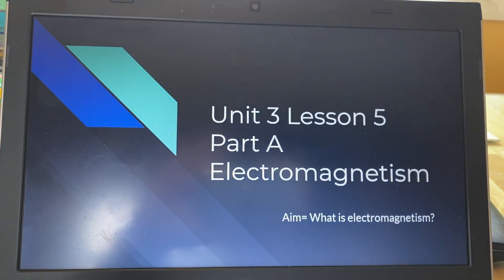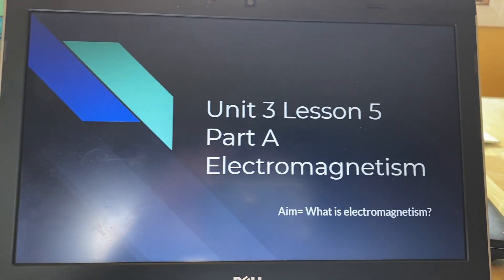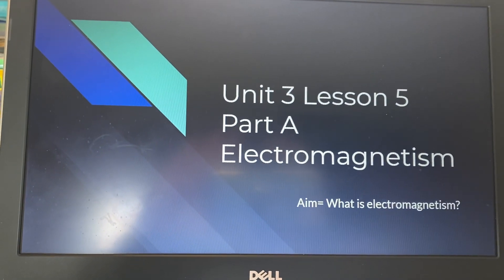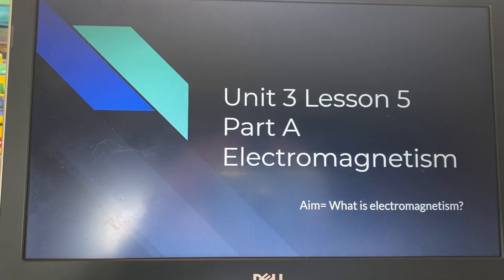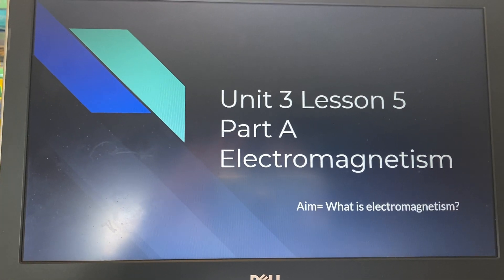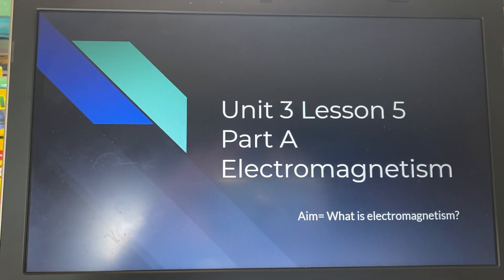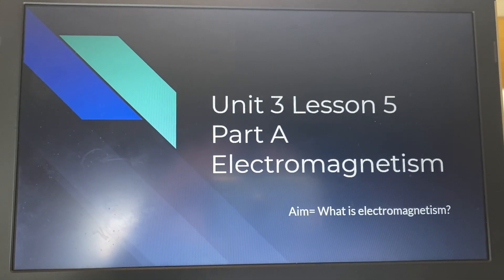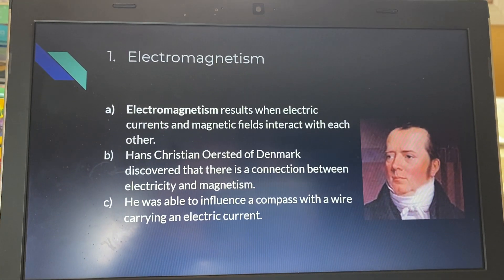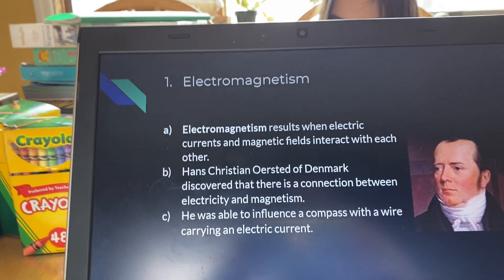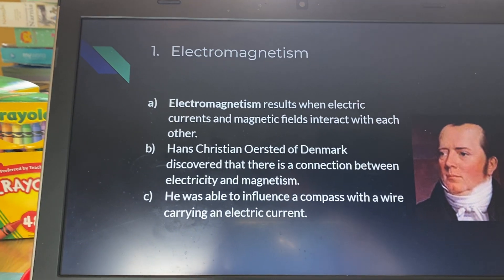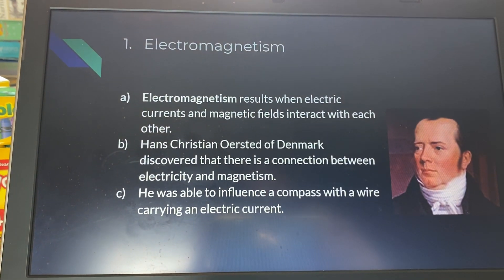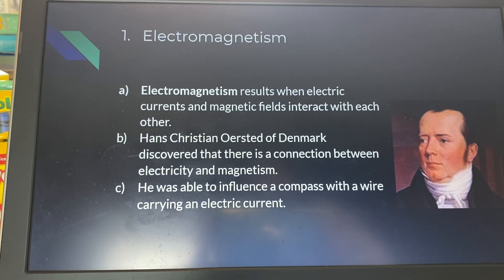We talked a little bit about electromagnetism the other day, but electromagnetism is really a combination of electricity and magnetism. So it's a very strong force. Electromagnetism results when electric currents and magnetic fields interact with each other.